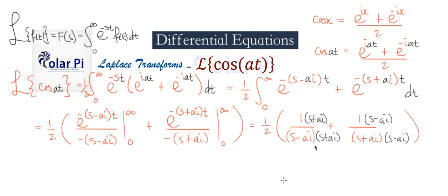And then here we have difference squared, so it's going to be s squared minus ai all squared. And so that's going to be s squared plus a squared, this here. And so this here too, common denominator.